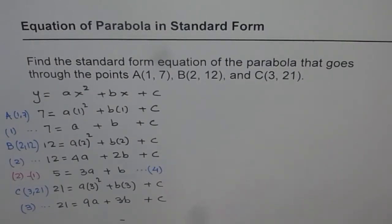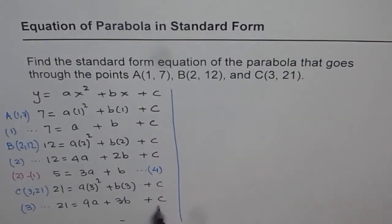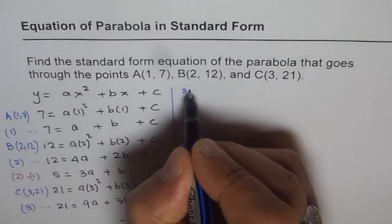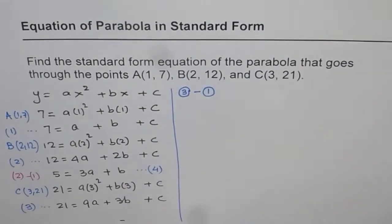Well, we need now to eliminate c from the third equation also, so that we have equation in a and b to solve for a and b. So let us use equation 1 and 3. So we can do now equation 3 minus equation 1. Then what do we get?